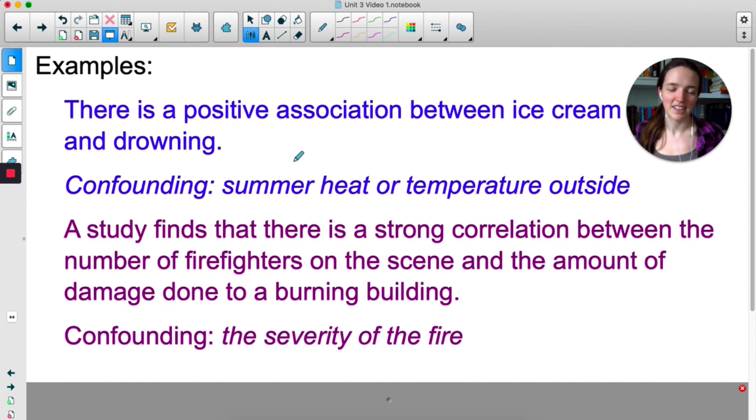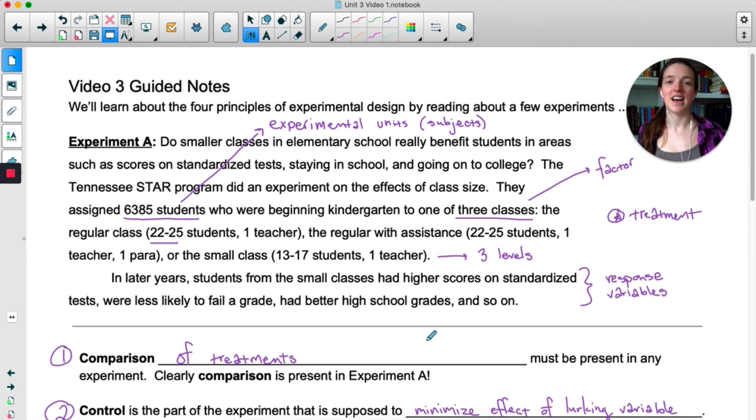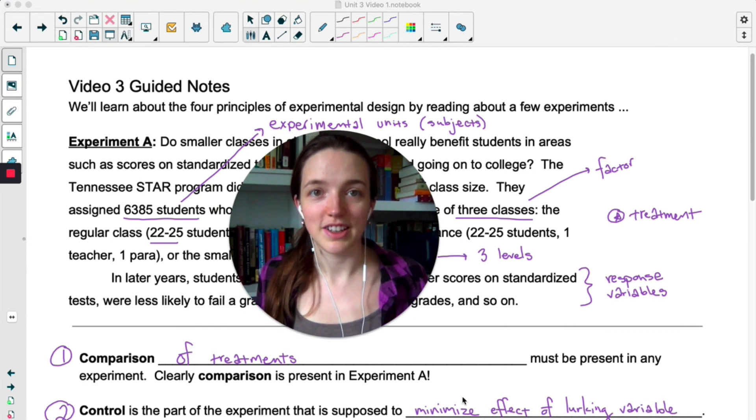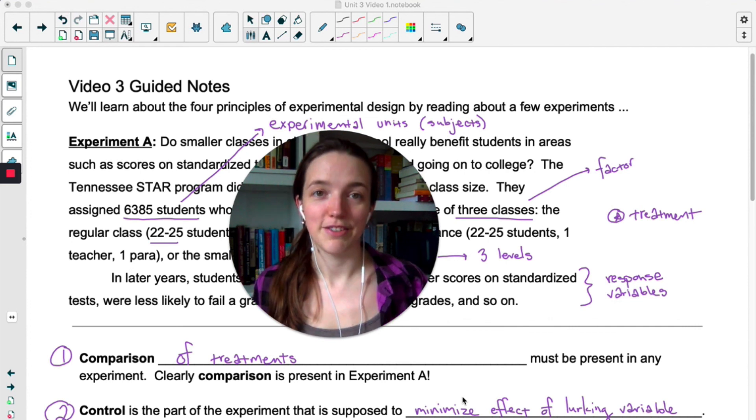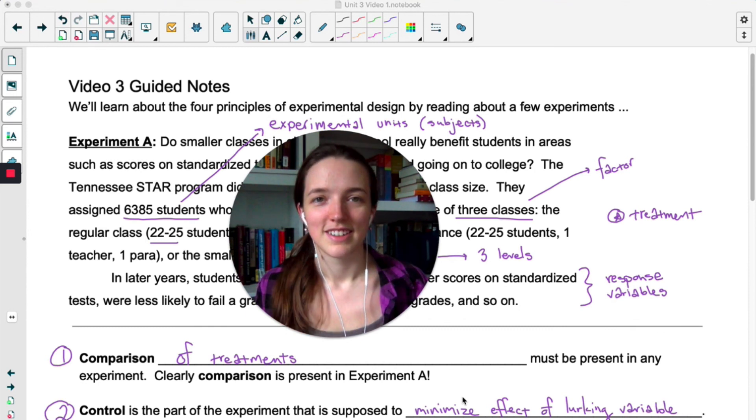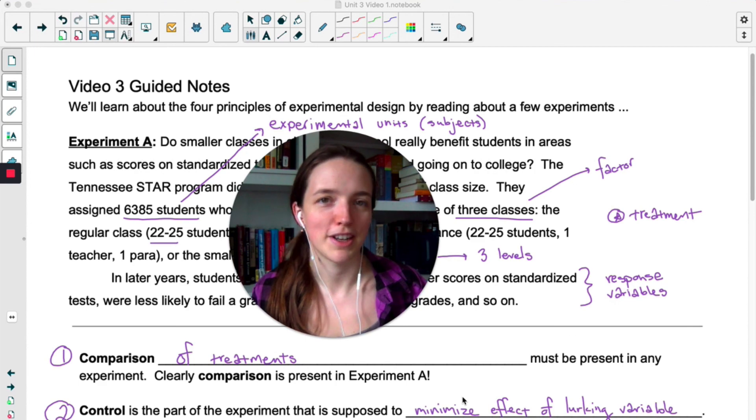These are kind of extreme examples of lurking variables. In Experiment A, we identified a lot of possible lurking variables like teacher experience, classroom setup, parent involvement in the student's education. When you're dealing with humans, it's really hard to make them similar and get rid of all lurking variables, which I think is the key of this unit. There's the theoretical experiment that you can design perfectly to minimize all possible sources of bias, and then there's the practical experiment that you can actually execute. In reality, when you're planning an experiment, you just have to do the best you can do and try to have all four principles of experimental design present. It's not going to be perfect, but you can make it as close to theoretically perfect as possible.